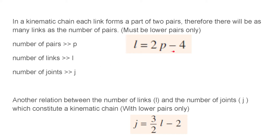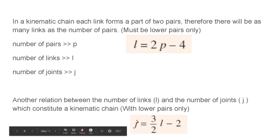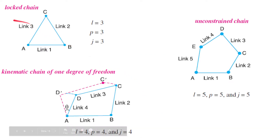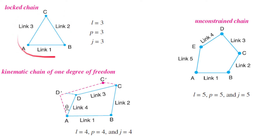In that case we say it is a locked chain and there are no degrees of freedom left — it is a rigid structure. Such structures are used for making trusses, as we have seen in Mechanics of Solids. Then we have a kinematic chain which has one degree of freedom.